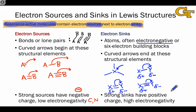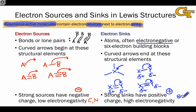Strong electron sinks are associated with positive charge and elements of high electronegativity — in contrast with electron sources. In an organic context, high electronegativity elements include the halogens such as bromine, chlorine, and iodine, but we also commonly see oxygen acting in this role as an electron sink.